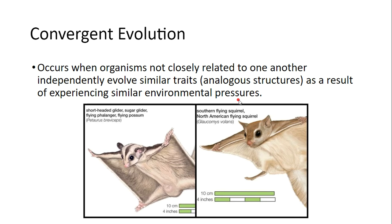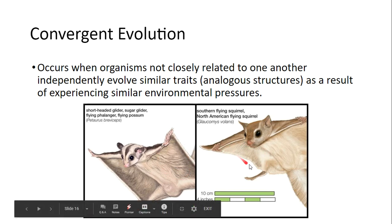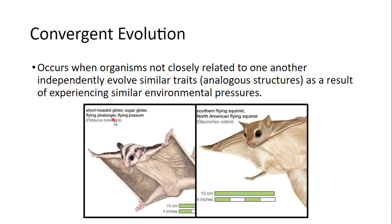For example, the sugar glider and the northern flying squirrel are not related and do not have a close common ancestor. However, they have developed similar traits — specifically, the skin flap that allows them to glide from one point to another. The sugar glider and the flying squirrel are an example of convergent evolution because they are not closely related but independently evolved similar traits.